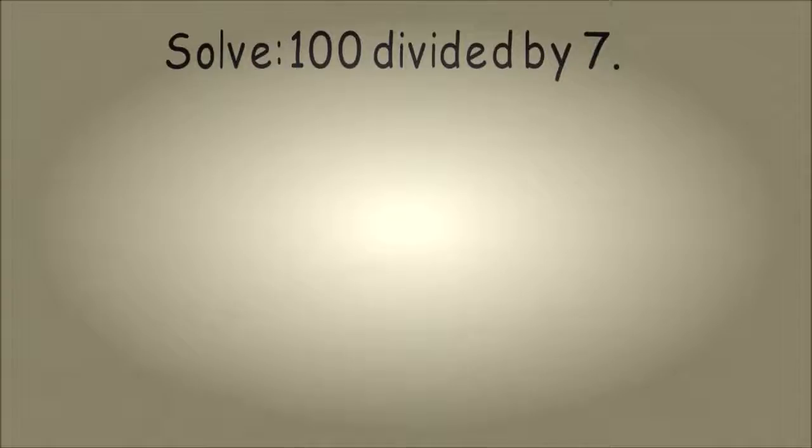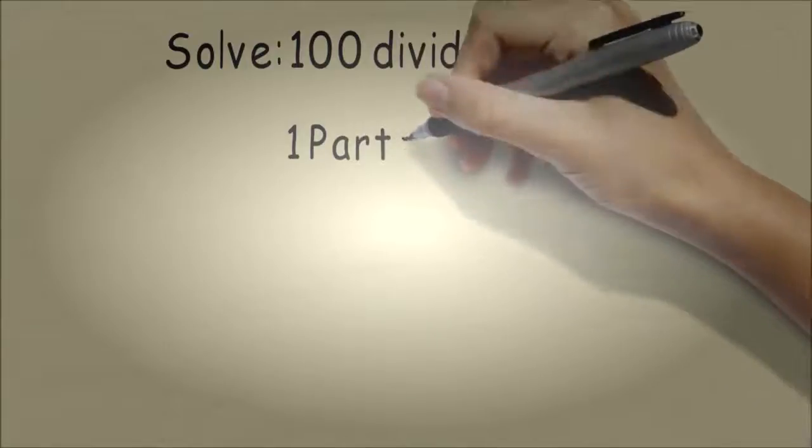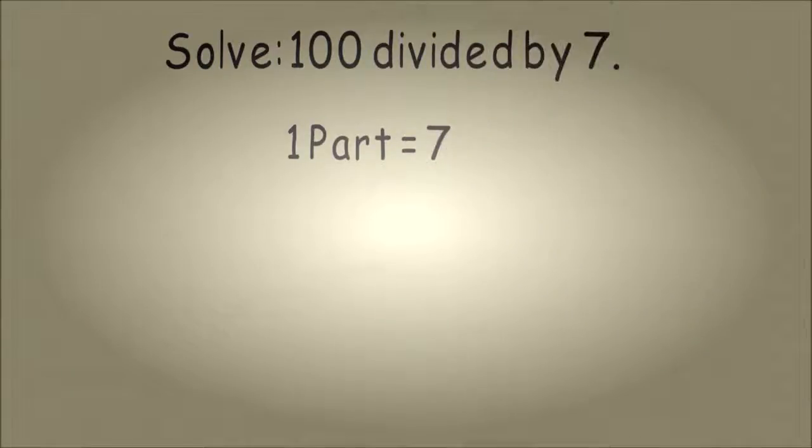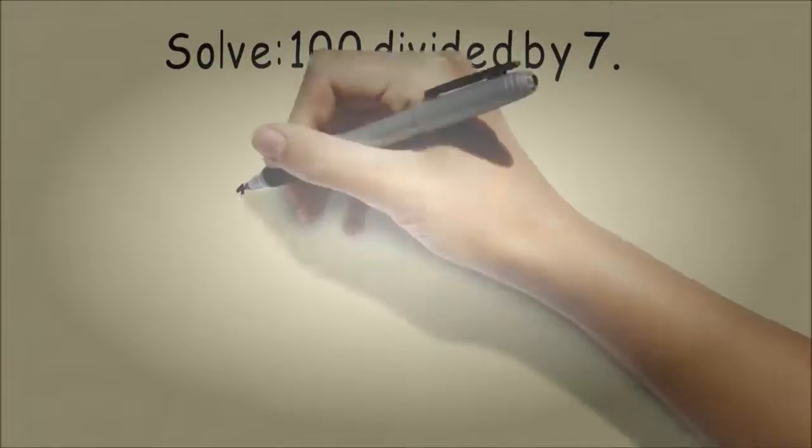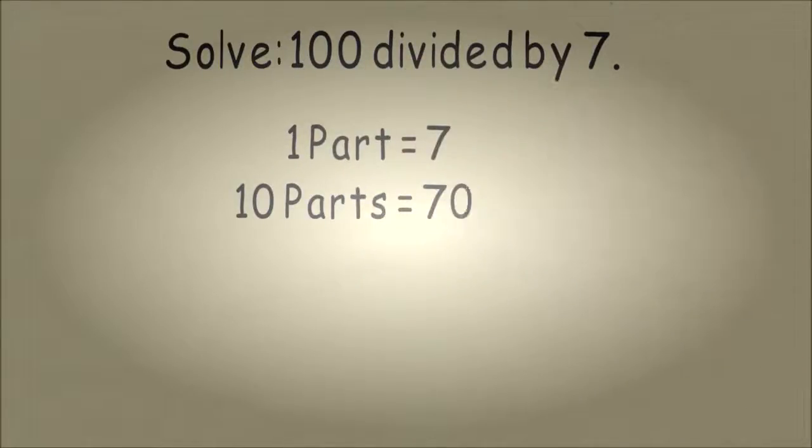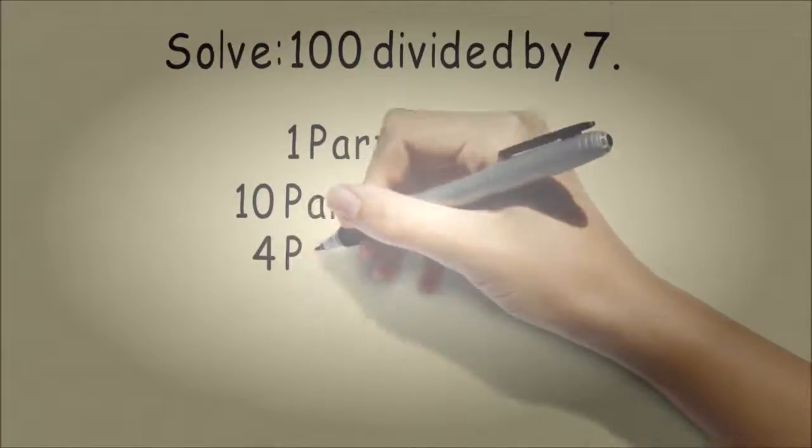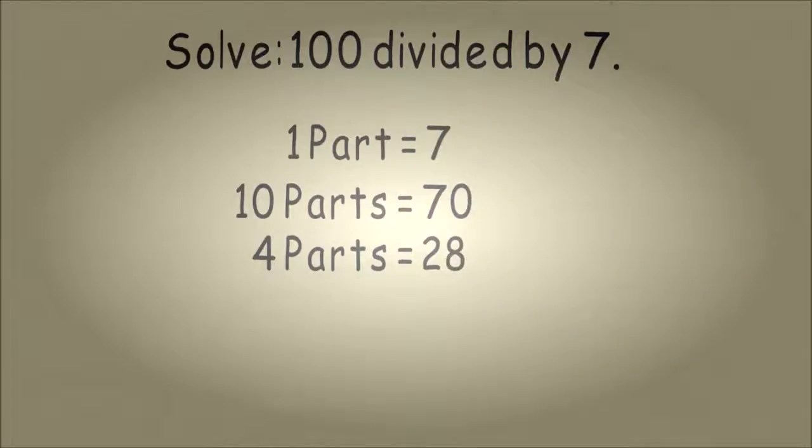We're going to count up multiples of 7 until we get to 100. So we start out that 1 part is equal to 7. We can clearly jump to 10 parts, which will be 70. We're still short by about 30. So we can add 4 parts of 7, which is 28.